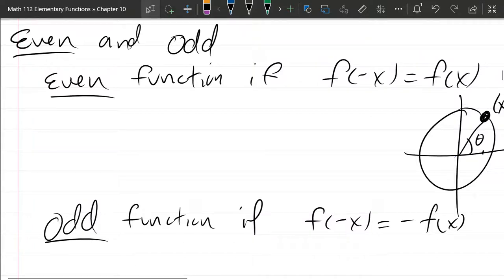The next property we're going to look at is even and odd. So I got the definition for even and odd written down. Even, what that means is if your input's negative, it's the same as the input being positive and vice versa. Odd means if your input's negative, your output's negative.